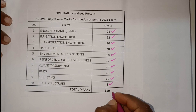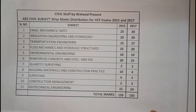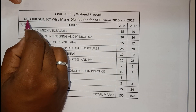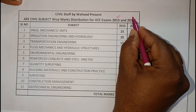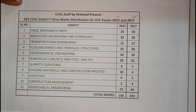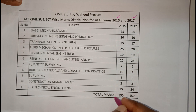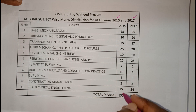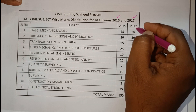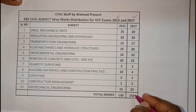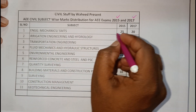This covers the AE syllabus of 150 marks total. Now coming to AEE civil subject-wise marks distribution as per 2015 and 2017 — for 2015 I have the direct live paper and have analyzed it perfectly, whereas for 2017 I was unable to get the paper, so this may vary by one or two percent.